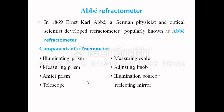The components of the refractometer are: first, the illuminating prism; then the measuring prism; the amici prism; the telescope, which can also be called a field eyepiece; the measuring scale; the adjusting knob; and the illumination source or reflecting mirror. Sometimes natural light reflected by a mirror is used to illuminate the prism surface, or a monochromatic source of light may be used as an illumination source.